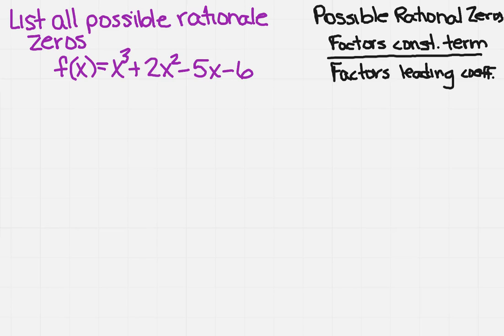We want to learn how to find all the possible rational zeros in a function. I've written out the equation on the right hand side. We take the factors of the constant term divided by the factors of the leading coefficient.